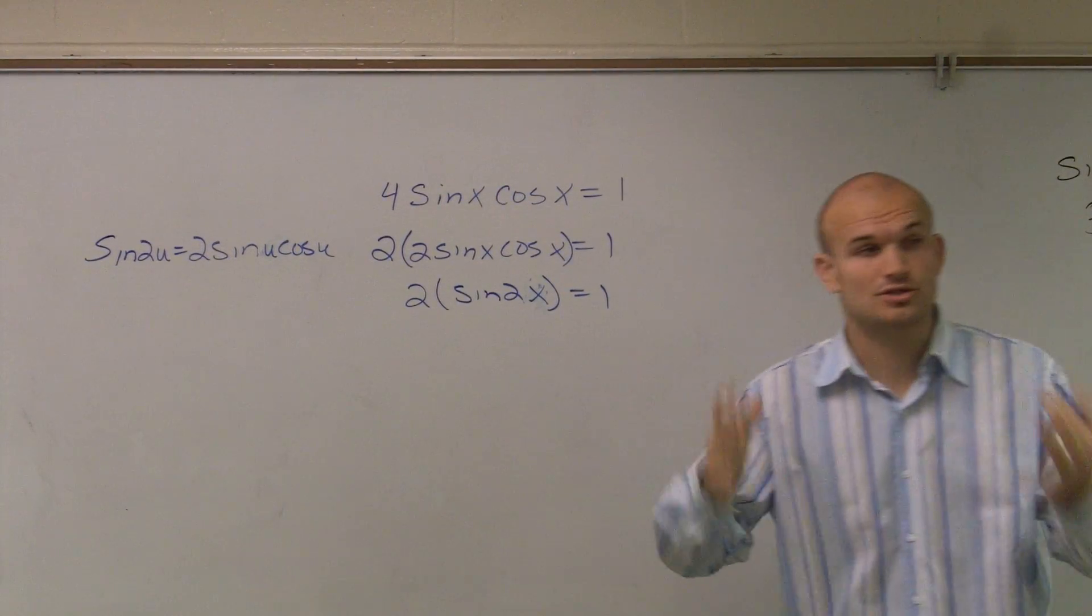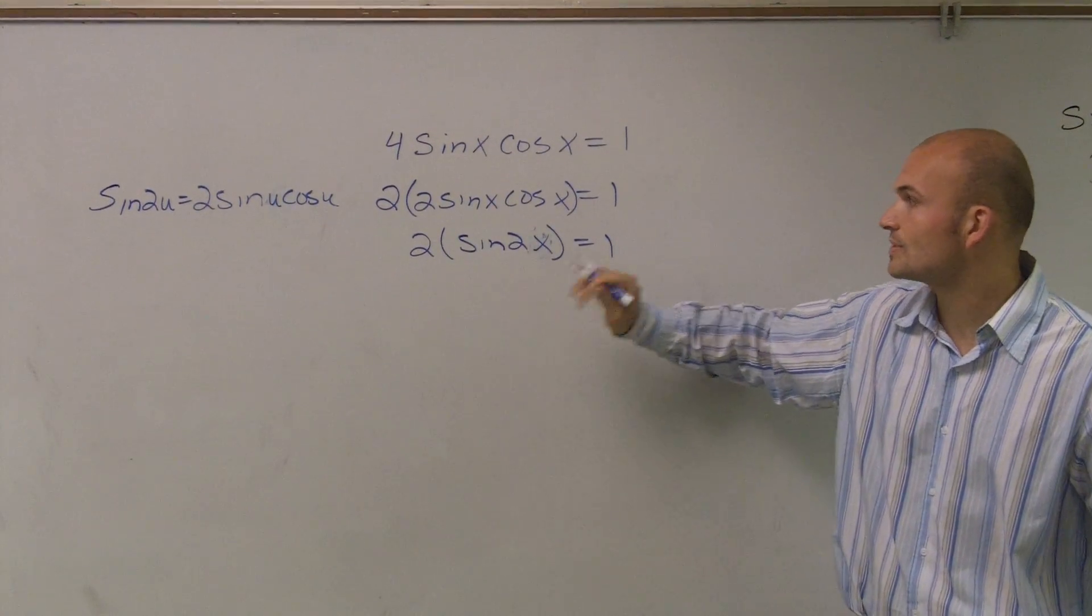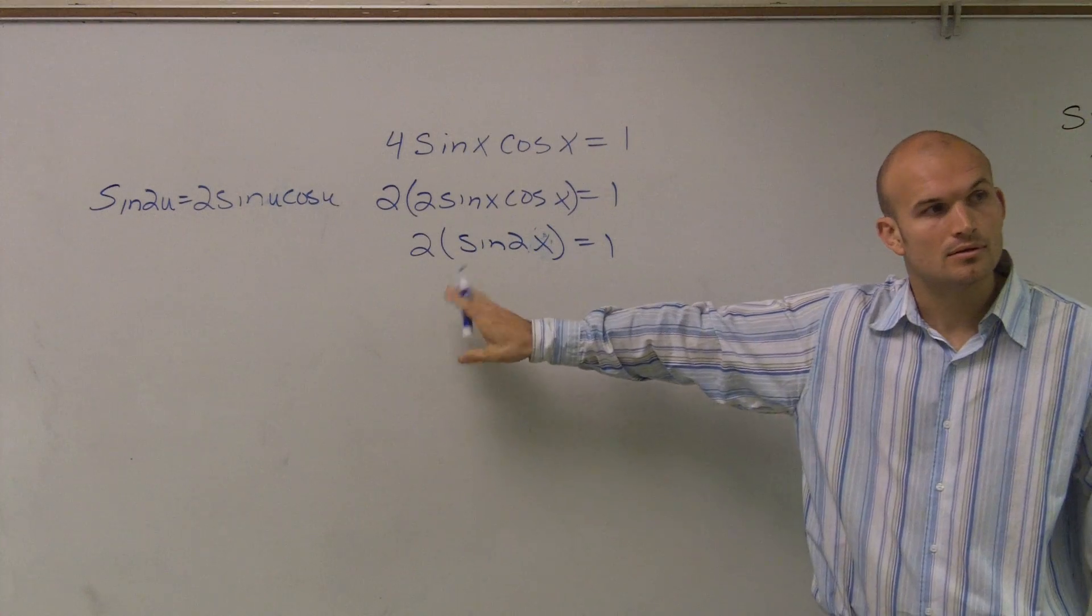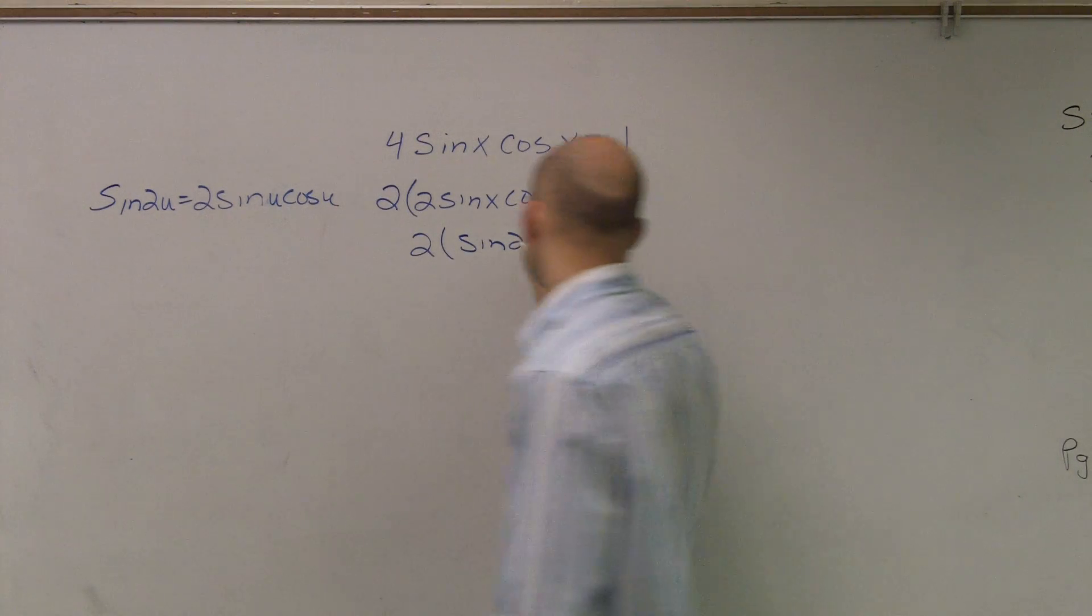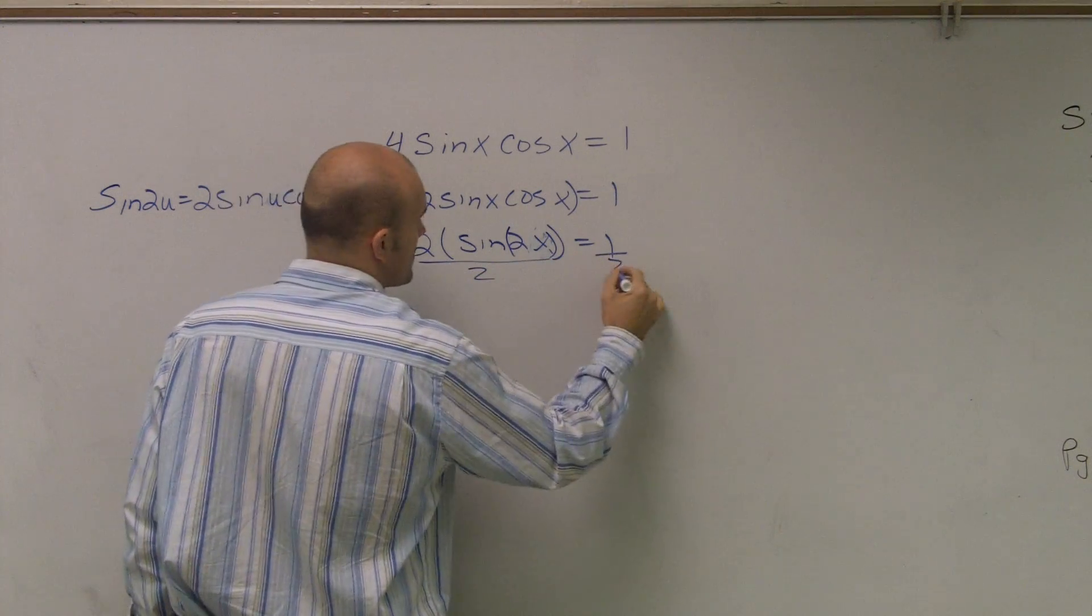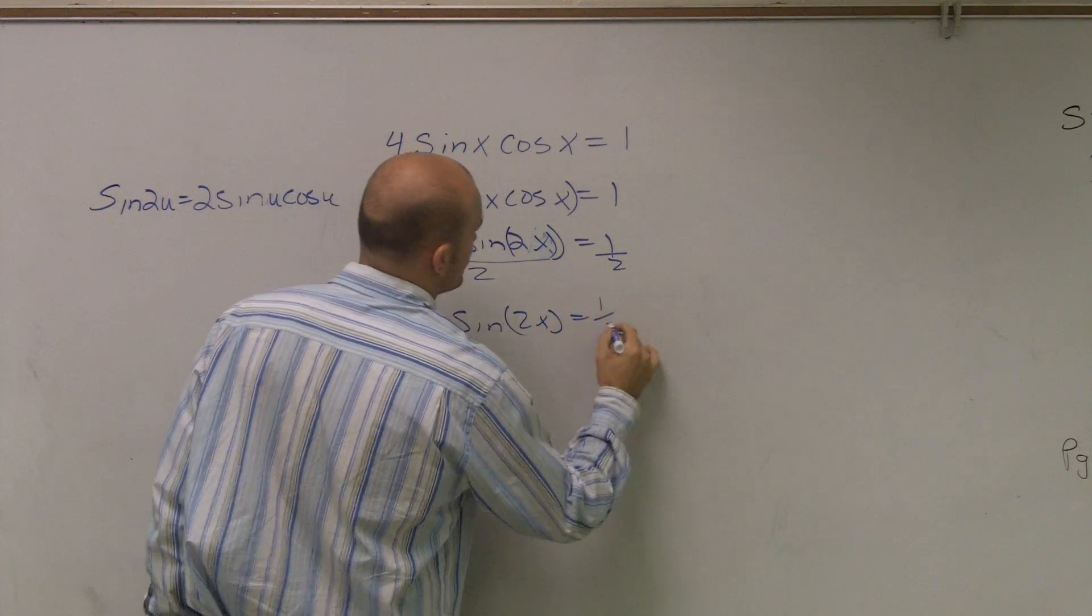Well, remember, all I did was I just took what the formulas. I said, how can I manipulate this and use these formulas to help me out? Well, now, now I can solve for my 2x, right? This is actually in there. So I divide by 2. So I have sine of 2x equals 1 half.